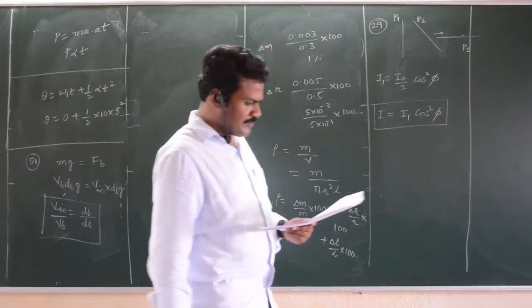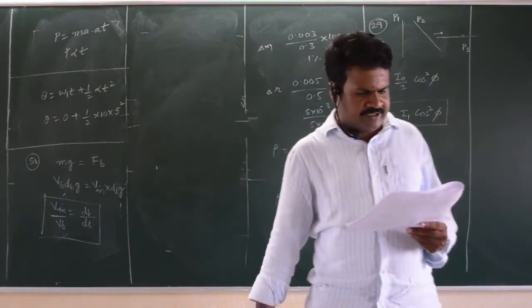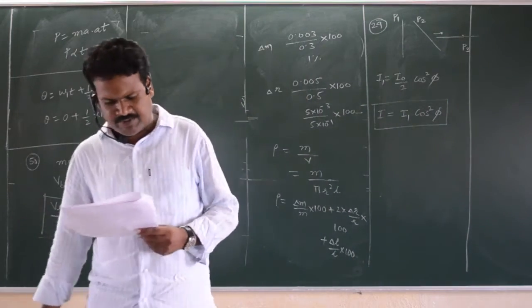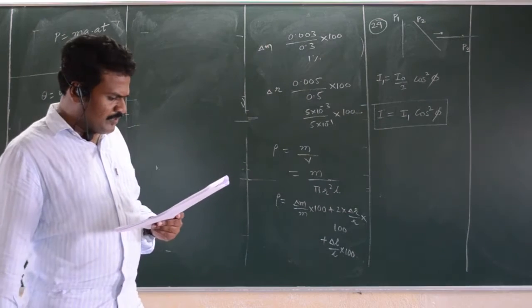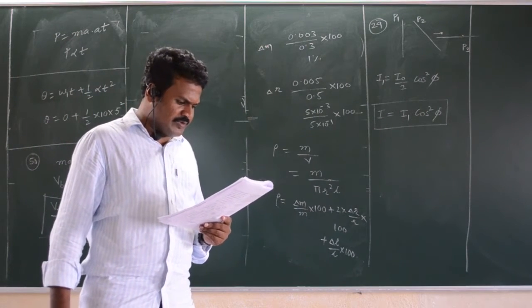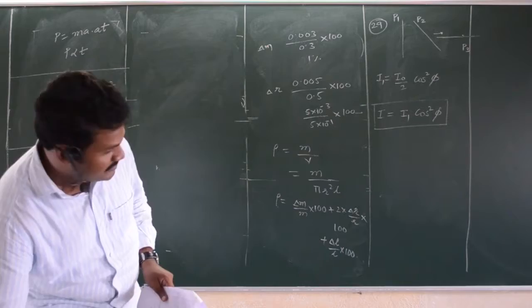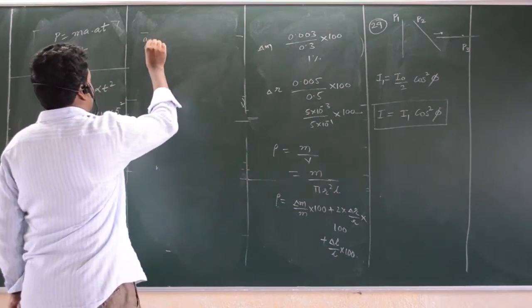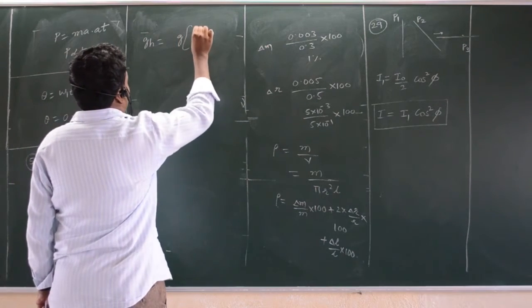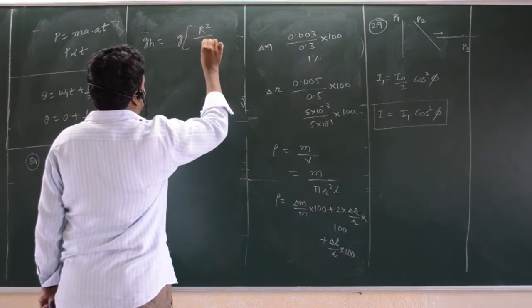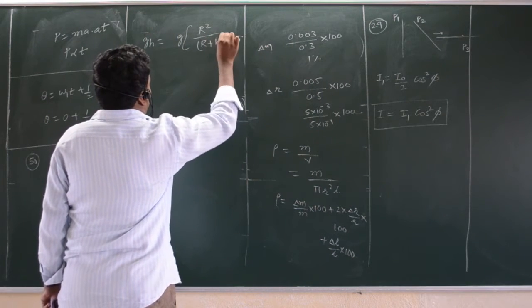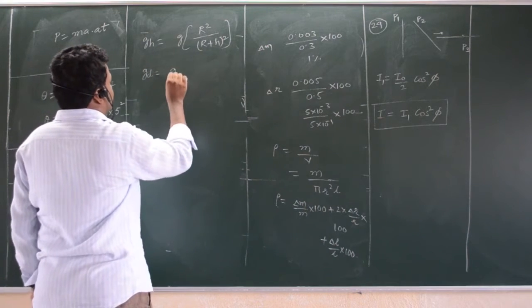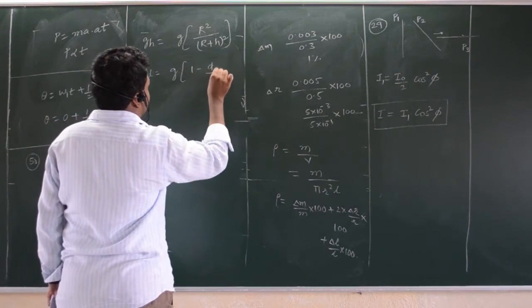What fraction is present? Then take the density of water there, you will get the answer. The value of acceleration due to gravity at a height of 10 km from surface of earth is x. At what depth inside the earth does the value of acceleration due to gravity have the same value x? This is also very simple question. Acceleration due to gravity at height h is equal to g h, and 1 minus d by r, where d is the depth.